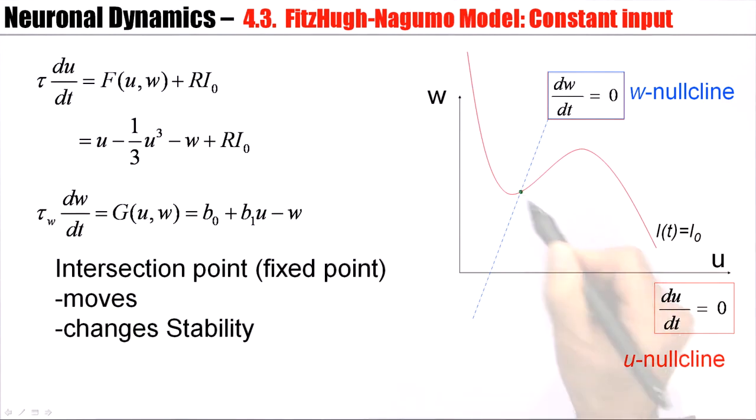The new fixed point is here. The old fixed point was there. And as the location of the fixed point changes, its stability may change as well. While this fixed point is stable, it could be that this fixed point here is unstable.